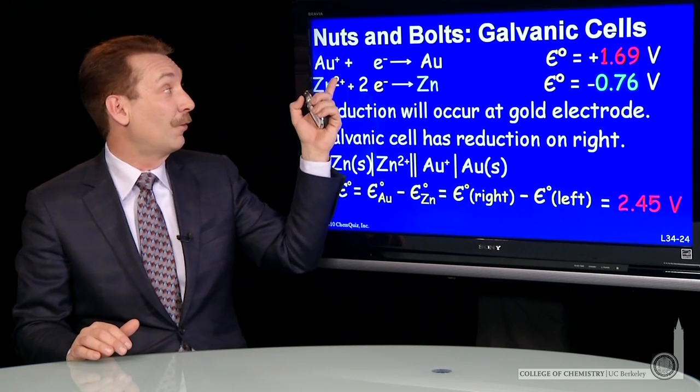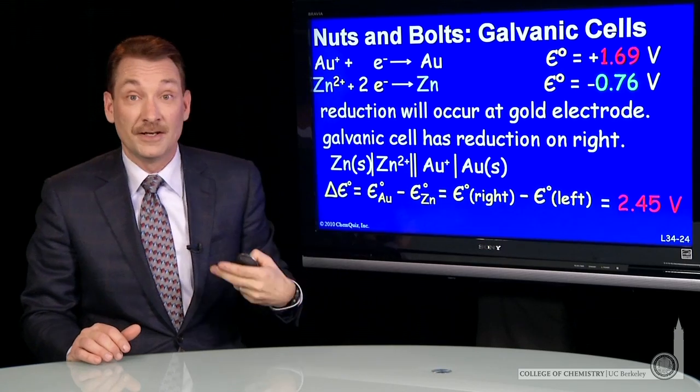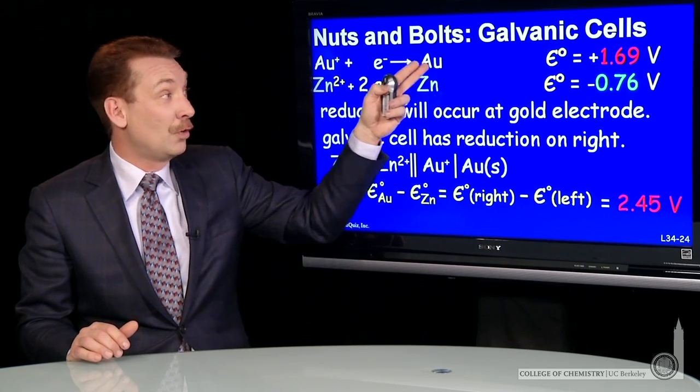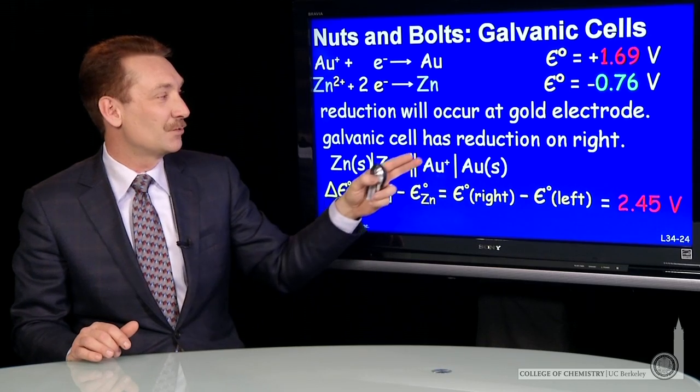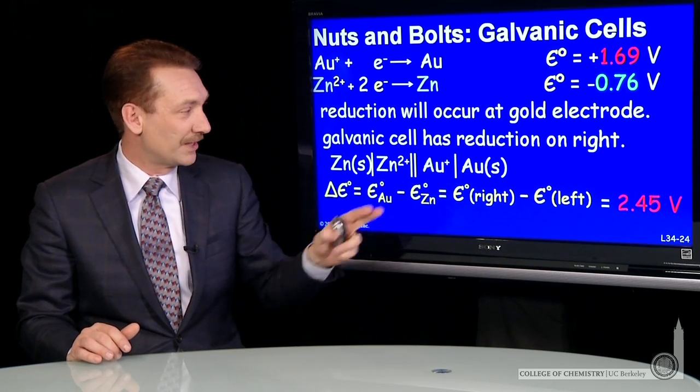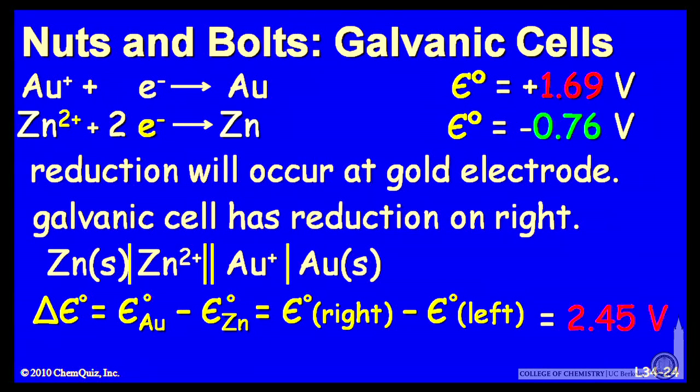Now, let's go back and do the same thing for gold and zinc. It's actually rather straightforward. It's very similar. The gold has the higher potential. So again, the gold is where the reduction occurs. So I can write the gold on the right, the zinc half cell on the left, and do that subtraction. And I get 1.69 minus a minus 0.76 gives me 2.45 volts for the standard potential.